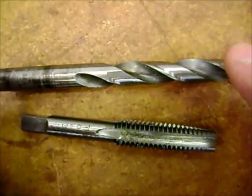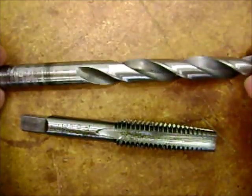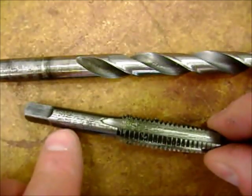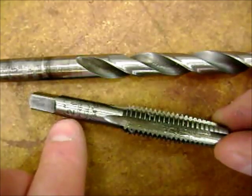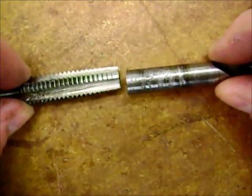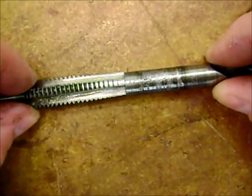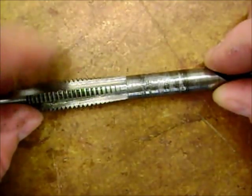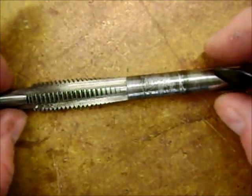So here is our tap and our tap drill. This is the twenty-seven sixty-fourths, as it said on the tap chart. This is a half inch by thirteen, as labeled right on the end, so there's no guessing. You will notice, if you compare the two, that the tap drill is smaller than the threads itself, so you actually have a hole small enough that we still have meat to cut out of the threads.